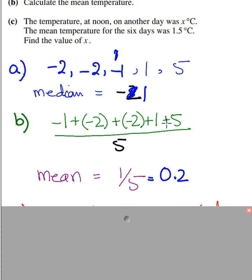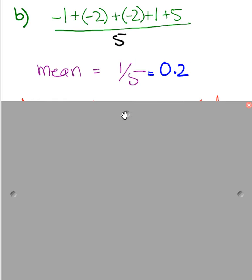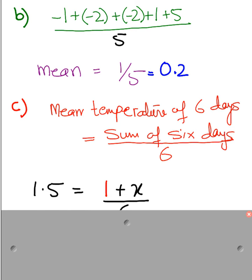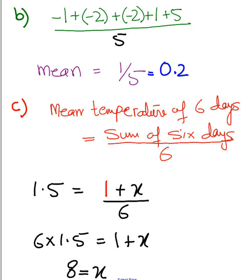The sum of the five temperatures is equals to one because of plus minus signs cancelling out. Part C is saying there was another day, sixth day, and you have to calculate its temperature. The mean of six days is equals to 1.5. We know that mean is always equals to sum of the data divided by number of data. So mean temperature of six days equals sum of six days temperature divided by six. Sum of five days temperature was one. Sixth day temperature we don't know, so I'm writing one plus x divided by six. That equals 1.5 given in the question. This helps me form the equation. You solve the equation and get the temperature on the sixth day.